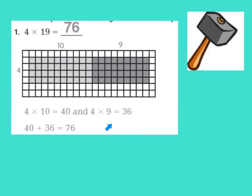These numbers, the 40 and the 36, they are called partial products. They are part of our final product.